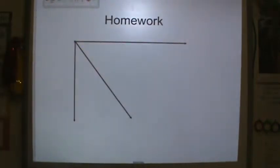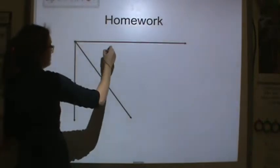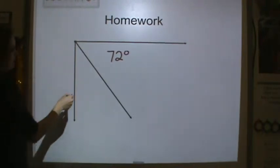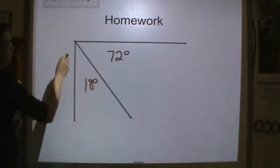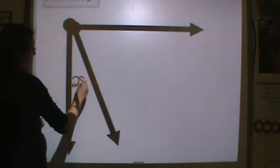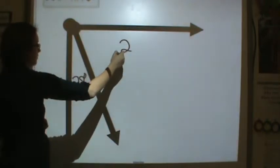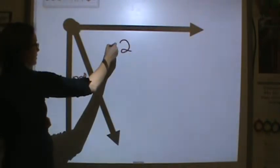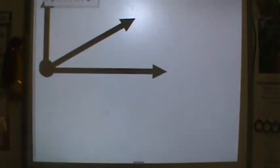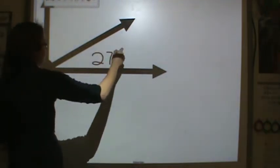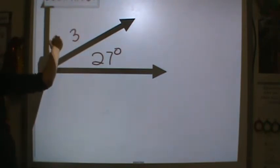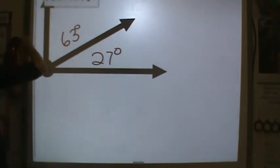For homework, I'm going to have you combine some angles. So I have 72 degrees here and I have 18 degrees. What is the total angle measure? I have 28 degrees and then I have 62 degrees. What is the combined angle measure? And last but not least, I have 27 degrees and I have 63 degrees. What's the combined angle measure?